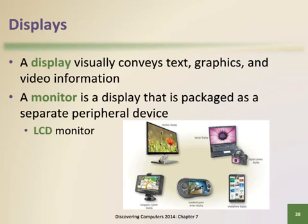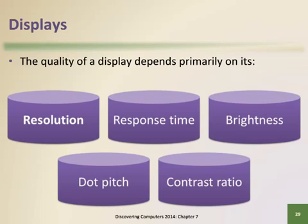A display device is the hardware component that can visually convey text, graphics, and video information to one or more people. The information shown on a display device is known as soft copy. One example is the LCD monitor, also known as a flat panel monitor. The quality of a display depends primarily on its resolution, response time, brightness, dot pitch, and contrast ratio.